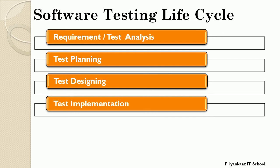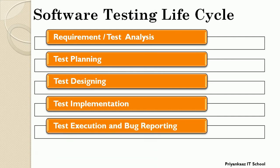In Test Implementation, the tester is also responsible to prepare test scripts — step-by-step procedures or actions to be performed on the test, written in a coding or scripting language. Whenever automation testing is needed, all automation test scripts are prepared in this phase. Once the environment is ready and all test cases and infrastructure are in place, we can proceed to the next phase.